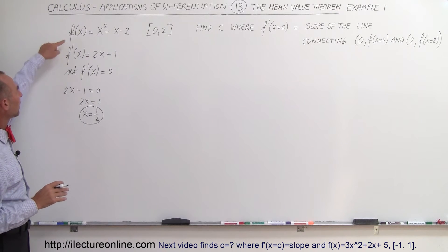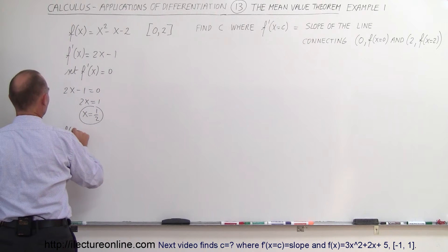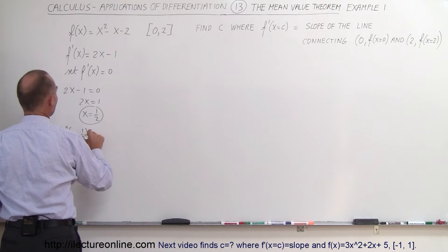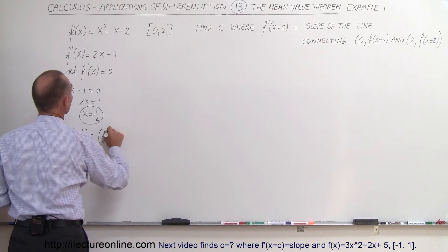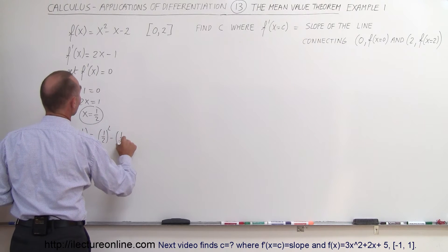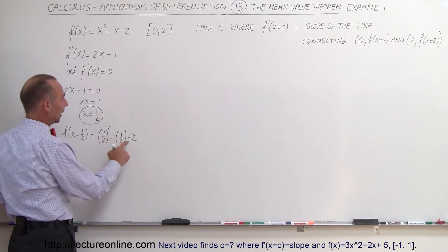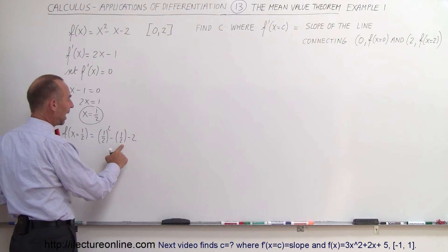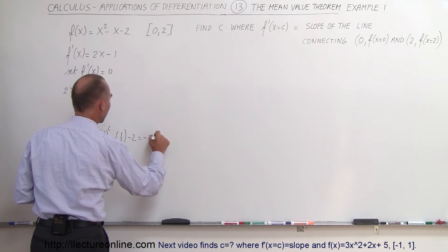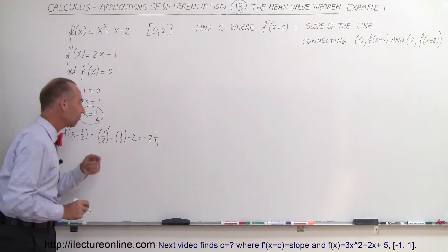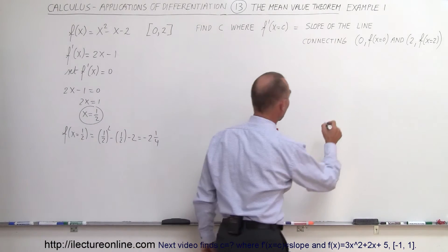So when x equals one half, we have a minimum value. Let's plug that back into the original equation. f(1/2) equals (1/2) squared minus (1/2) minus 2, which is a quarter minus 2 and a half, which equals minus 2 and a quarter. So when x equals one half, y equals minus 2 and a quarter.